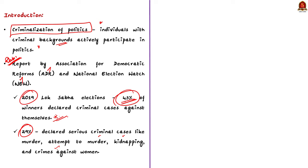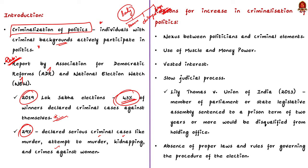Now moving on to the main part of the answer. You can split the body into three parts. In the first part, list the reasons for the increase in the criminalization of politics. In the second part, write about the challenges posed by it. And in the third part, write about the steps taken to combat the criminalization of politics. Now let us start with the first part — what are the reasons for the increase in the criminalization of politics?